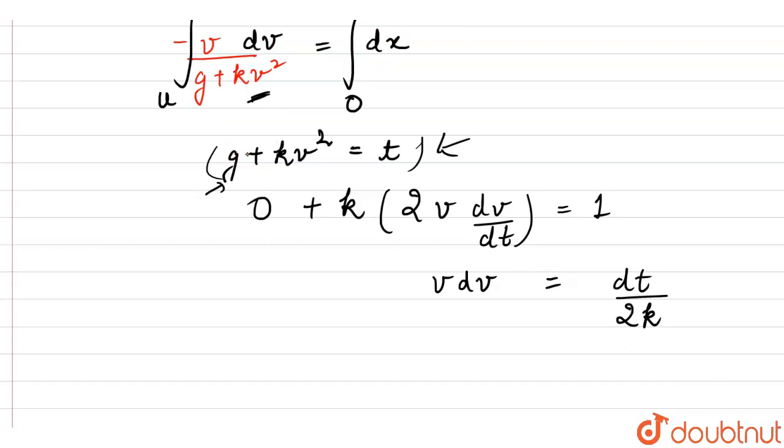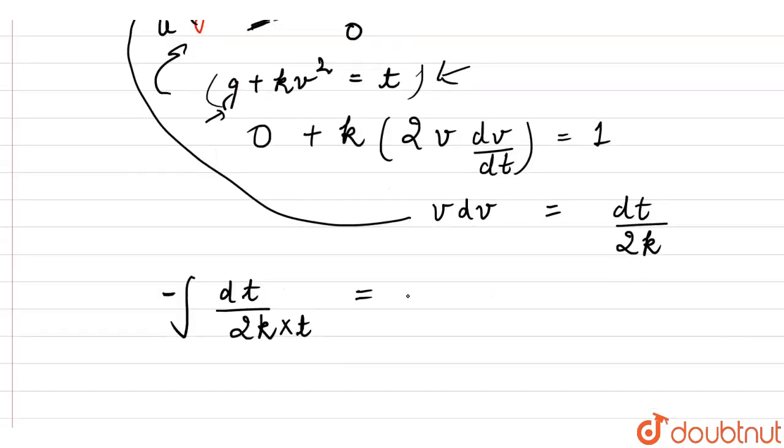Let's put this value. We get integration minus, let's take minus sign outside. vdv is dt divided by 2k, dt divided by 2k and g plus kv squared. This is t. So this into t. This equals dx. The integration of dx is x.